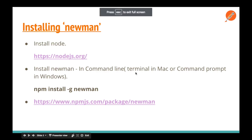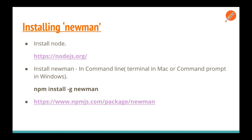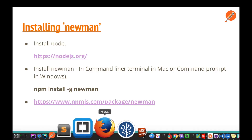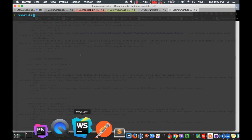Next, you want to install Newman. You can install it by running the command: npm install -g newman. This uses npm — the Node Package Manager — to install the Newman dependency. It's a very simple process, so make sure you install Node.js before this step.